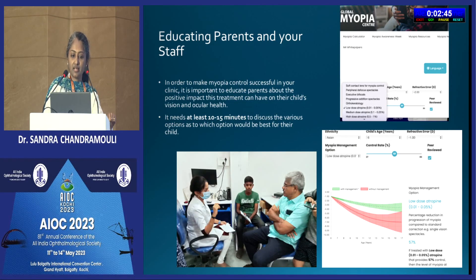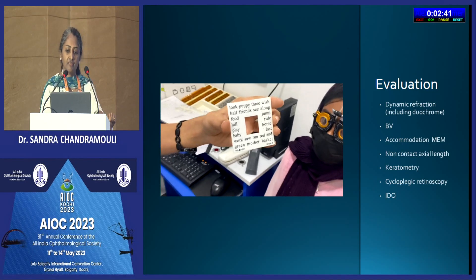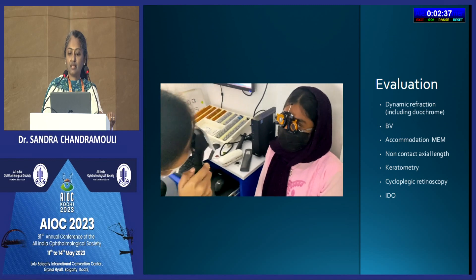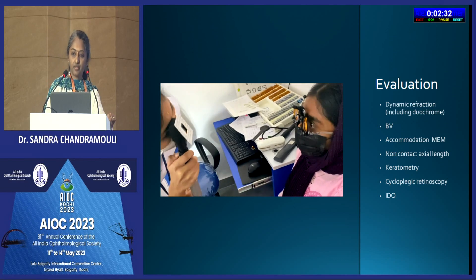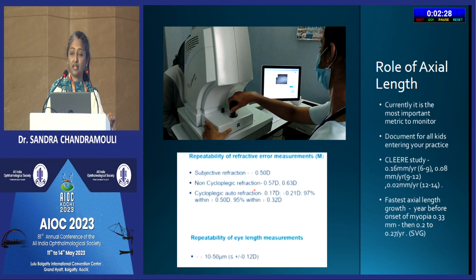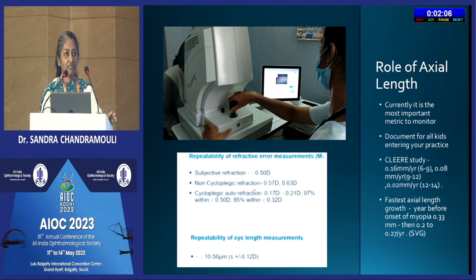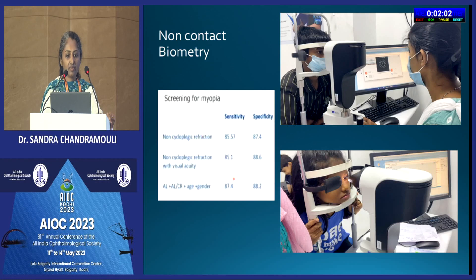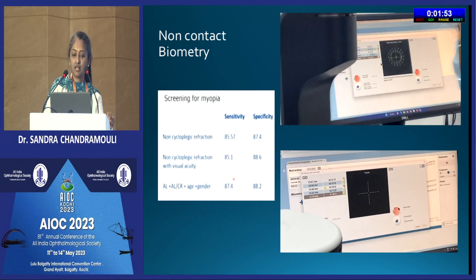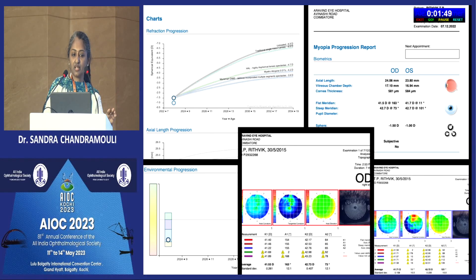Key points in history include age - myopia starting at around six years is very different from onset at 11 or 12 - parental myopia, near work, outdoor time, prior progression, and prior treatment. Educating staff and parents is very important. Evaluation includes dynamic refraction including duochrome, NPC analysis, MEM accommodation, non-contact axial length, keratometry, cyclorefraction, and indirect ophthalmoscopy. Axial length is the most important metric to monitor. The repeatability of refractive error measurement with subjective refraction alone can be around plus or minus 0.5 diopters, but for eye length measurement the repeatability is between 10 to 50 micrometers - a much more effective indicator.